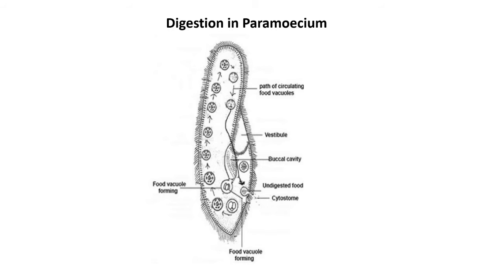This diagram shows the digestive system of Paramecium. With the help of the vestibule and cilia, Paramecium takes food material into the body; the food material enters the cytoplasm through the cytostome. The circular action of the cytoplasm — called cyclosis — moves food material in a circular manner. When food enters the cytoplasm, the protoplasm secretes certain enzymes and the food material is digested into simple form. After digestion, the undigested food material is eliminated from the body through the cytoproct. Complete digestion in Paramecium thus takes place in different stages.